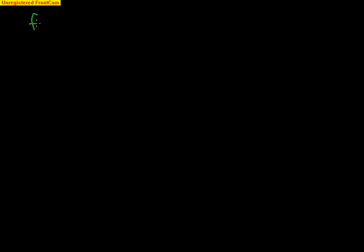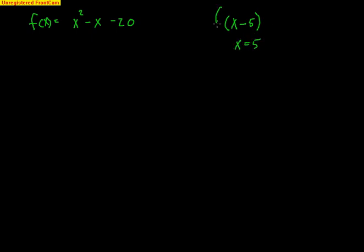Now, what we're going to work on next is what happens if you know one factor but aren't sure of the other. For example, let's say here's a function: x squared minus x minus 20. Maybe you know how to factor this, or you could use the quadratic formula. But let's say I tell you one of the factors is x minus 5 — meaning one zero is x equals 5. This is a quadratic, so there are going to be two factors and two zeros. I need to find the other one using a process called synthetic division.